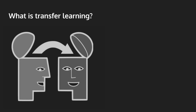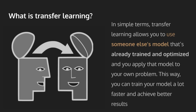So let's first start with what is transfer learning? You might guess from the name that we're transferring something to something else, and you'd be right. Essentially, transfer learning allows you to use someone else's model that is already trained and optimized, and you apply that model to your own problem.